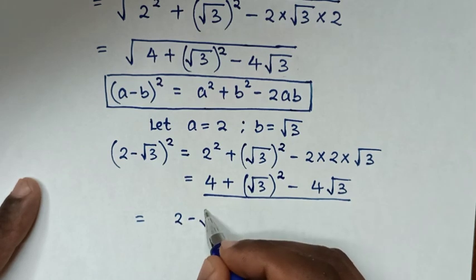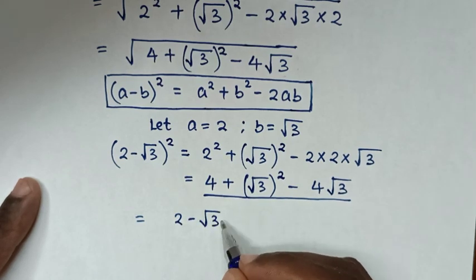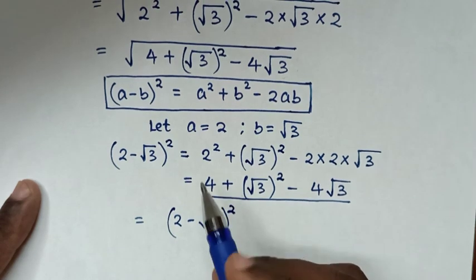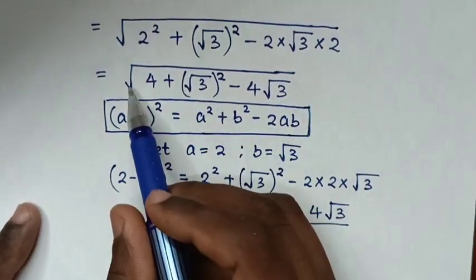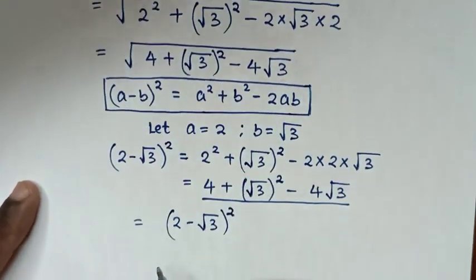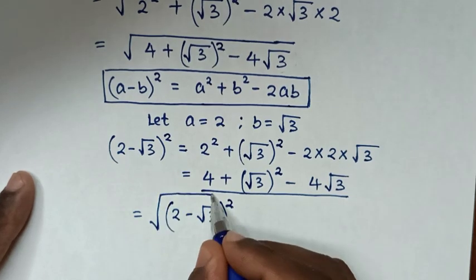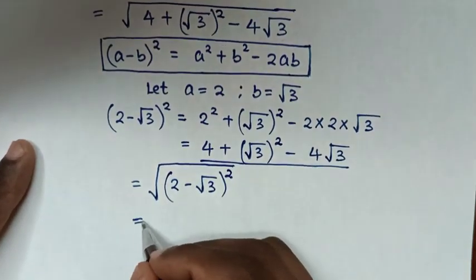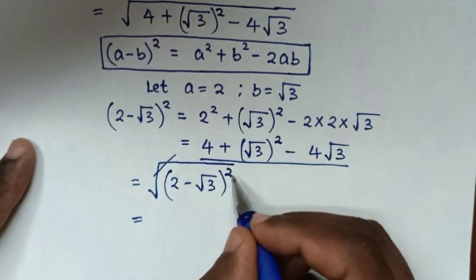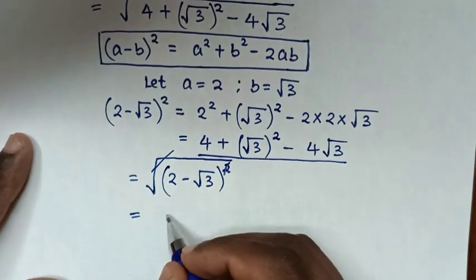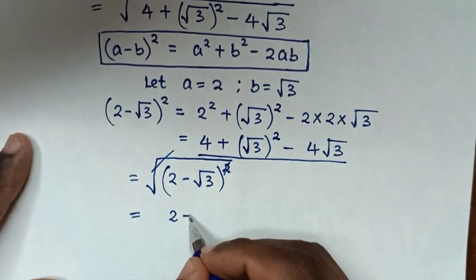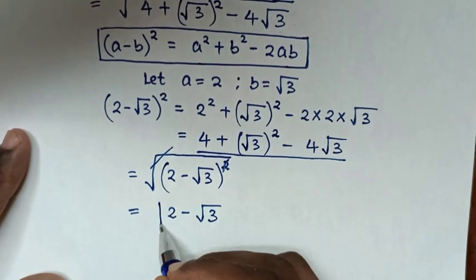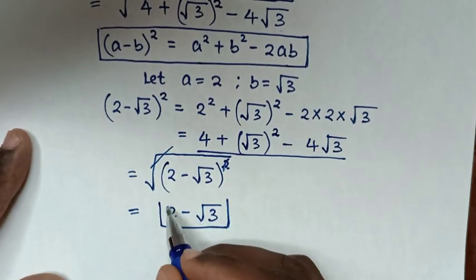So the expression under the square root equals (2 − √3)². Applying the square root cancels the square, giving us 2 minus √3. Therefore, this is our final answer.